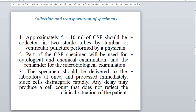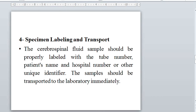Five to ten milliliters of CSF should be collected into a sterile tube by lumbar or ventricular puncture. Part of the CSF specimen will be used for cytological and chemical examination, and the remainder for microbiological examination. The specimen should be delivered to the laboratory at once and processed immediately, since cells disintegrate rapidly. Any delay may produce a cell count that does not reflect the clinical situation of the patient. The specimen must be labeled with a tube number, patient name, and hospital number or other identifier.